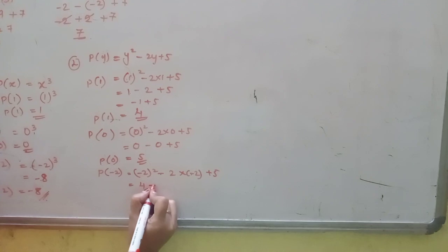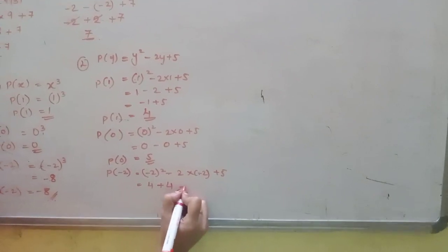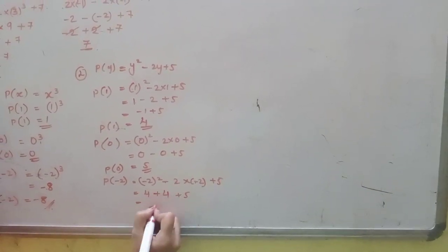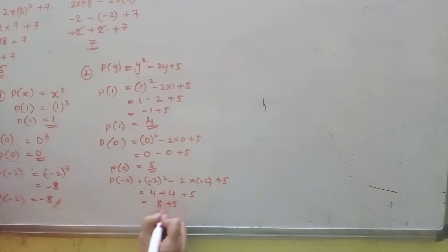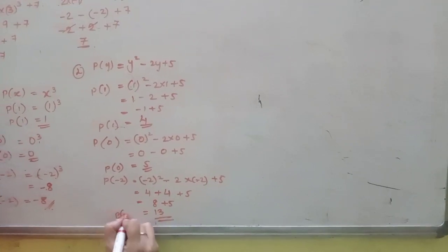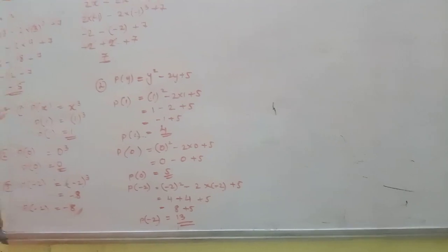(-2)² is 4, minus 2 into -2 is plus 4, plus 5. 4 plus 4 is 8 plus 5. P(-2) = 13.